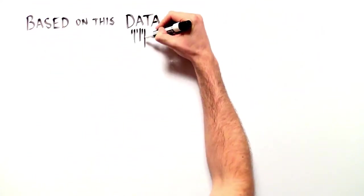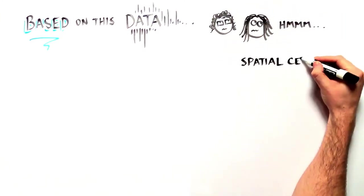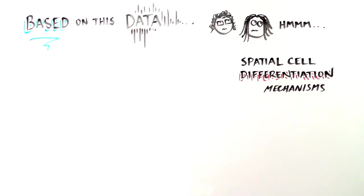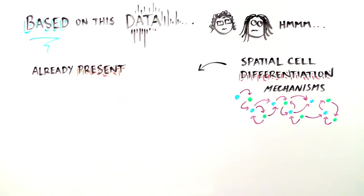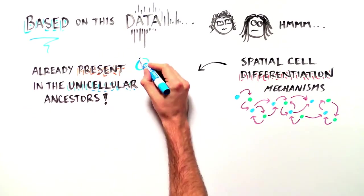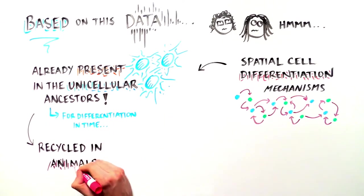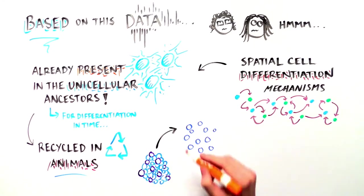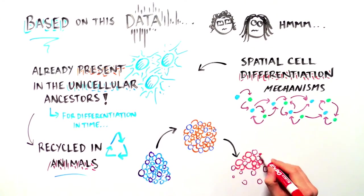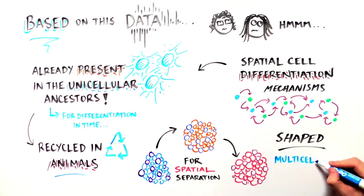Based on these results, the researchers hypothesized that the mechanisms of spatial cell differentiation were already present in the unicellular ancestor of animals. However, these mechanisms were probably used to differentiate cell types across life stages in a temporal manner, as Capsospora does, and were later recycled in animals to spatially differentiate cells within a single multicellular body. Therefore, these mechanisms might constitute the molecular basis for the transition from temporal to spatial cell differentiation, which helped shape multicellularity in animals.